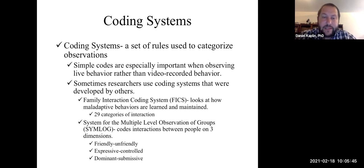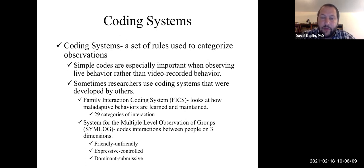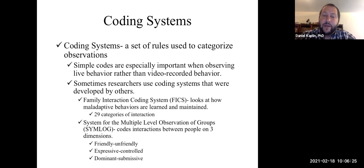Here are a couple of examples of coding systems. The Family Interaction Coding System, or FICS, has 29 categories of interaction between members of the family that you score, with given scoring options. It looks specifically at maladaptive behaviors, how they're learned, and how they're maintained. SIMLOG — the System for Multiple Level Observation of Groups — codes interactions between people on three dimensions: friendly or unfriendly, expressive or controlled, and dominant or submissive. These are spectrum-based ranges, and the dimensions you're looking at are pre-established.